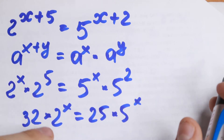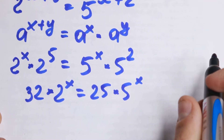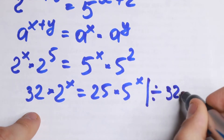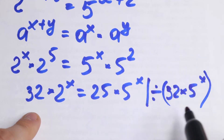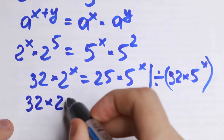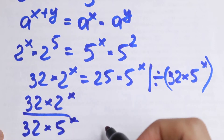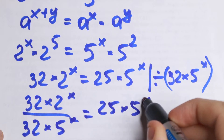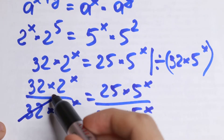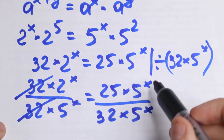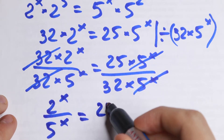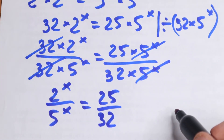Next, let's bring all the x terms to one side and all constants to the other. We divide both sides by the product 32 times 5 to the power x. On the left, the 32 cancels; on the right, the 5 to the power x cancels. As a result, we have 2 to the power x divided by 5 to the power x, equal to 25 divided by 32.